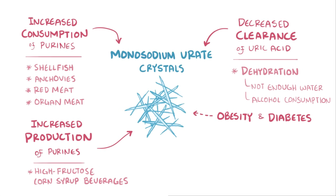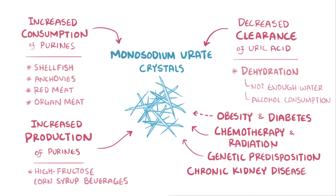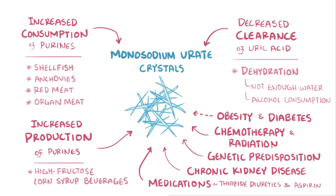Hyperuricemia can also develop as a result of chemotherapy or radiation treatment, since cells die at a faster-than-normal rate. Also, some individuals have a genetic predisposition to overproduction of uric acid, while others with chronic kidney disease may be unable to excrete it. Finally, some medications like thiazide diuretics and aspirin can also increase the levels of uric acid and therefore the risk of gout.